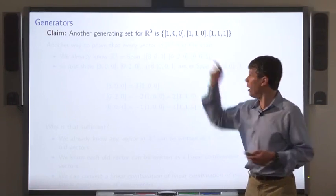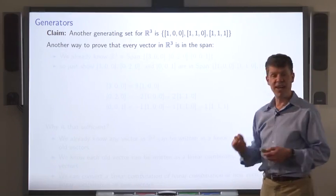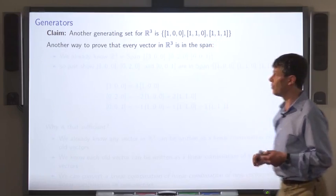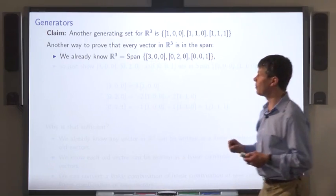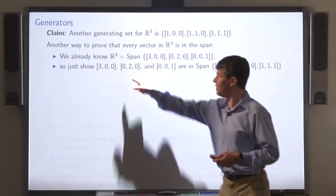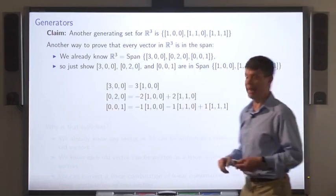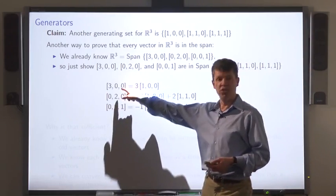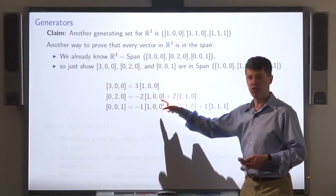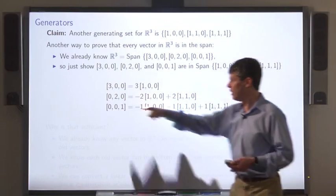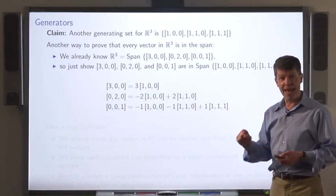I claim that this is another generating set for R3. Another way of showing that every vector in R3 is in the span of these new vectors is this: we already know that R3 equals the span of the old vectors. What I'm going to do is show that each of the old vectors is in the span of the new vectors, by exhibiting a linear combination. The first vector is 3 times the old vector; the second is minus 2 times the first old vector plus 2 times the second old vector, and so on. So I've shown that the new vectors are in the span of the old vectors.